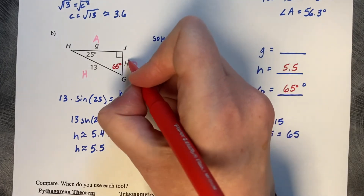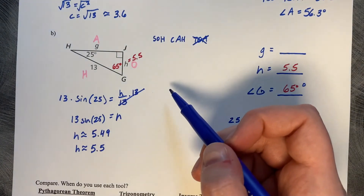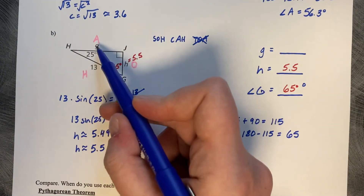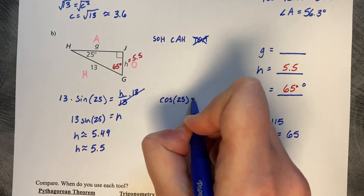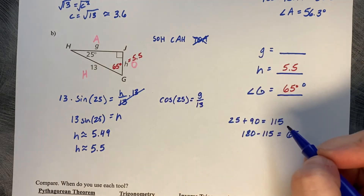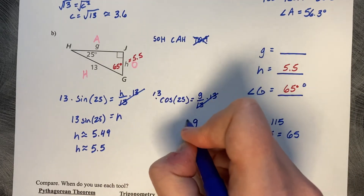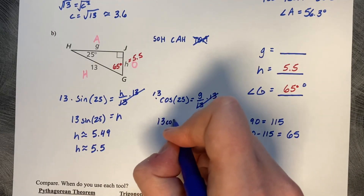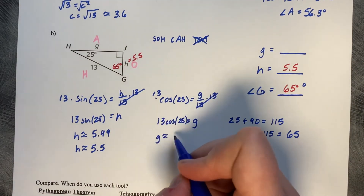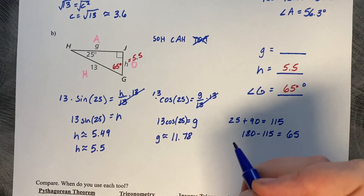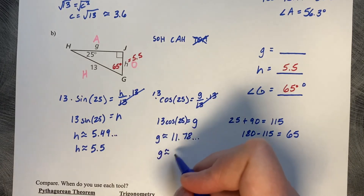For G, it's adjacent and hypotenuse, so that's cosine. Cosine of 25 equals G over 13; multiplying both sides by 13 gives G equals 13 times cosine of 25, which is approximately 11.78, rounded to 11.8.